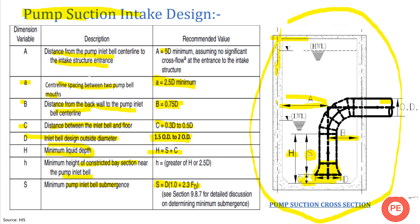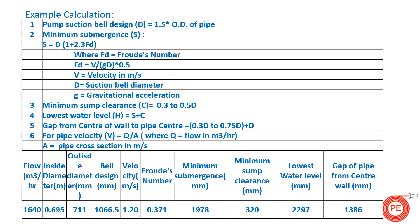Parameter H (capital) is the minimum height of the constructed base section near the pump inlet bell, and should be the greater of H (low water level) or 2.5 times D. These basic parameters are used while calculating pump suction design for centrifugal pumps to minimize dry run, cavitation, vibration, and other problems. These standards are given in HIS — the Hydraulic Institute Standards — and process designers should follow them while designing pump suction.